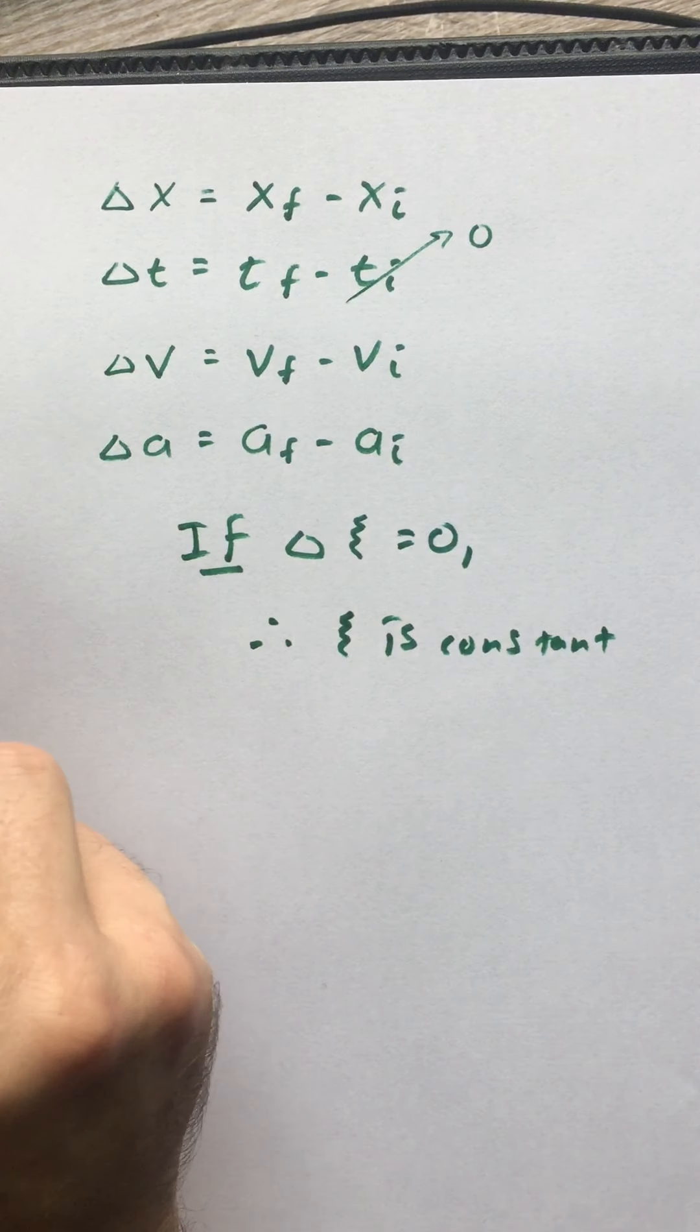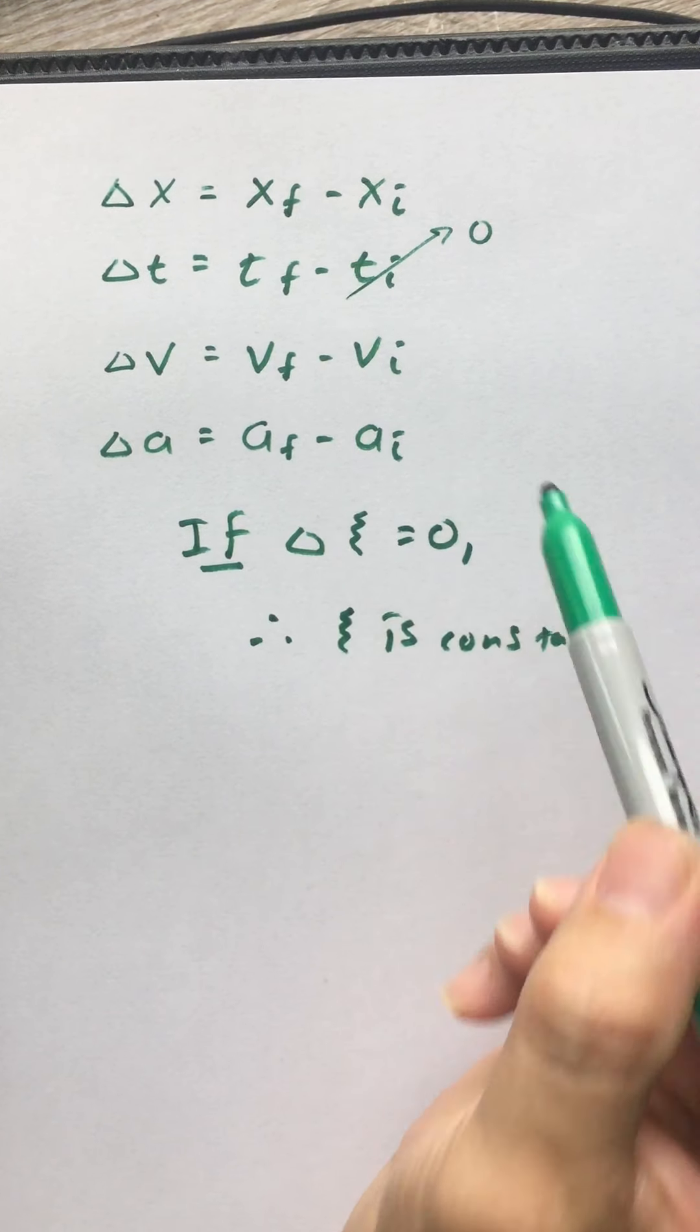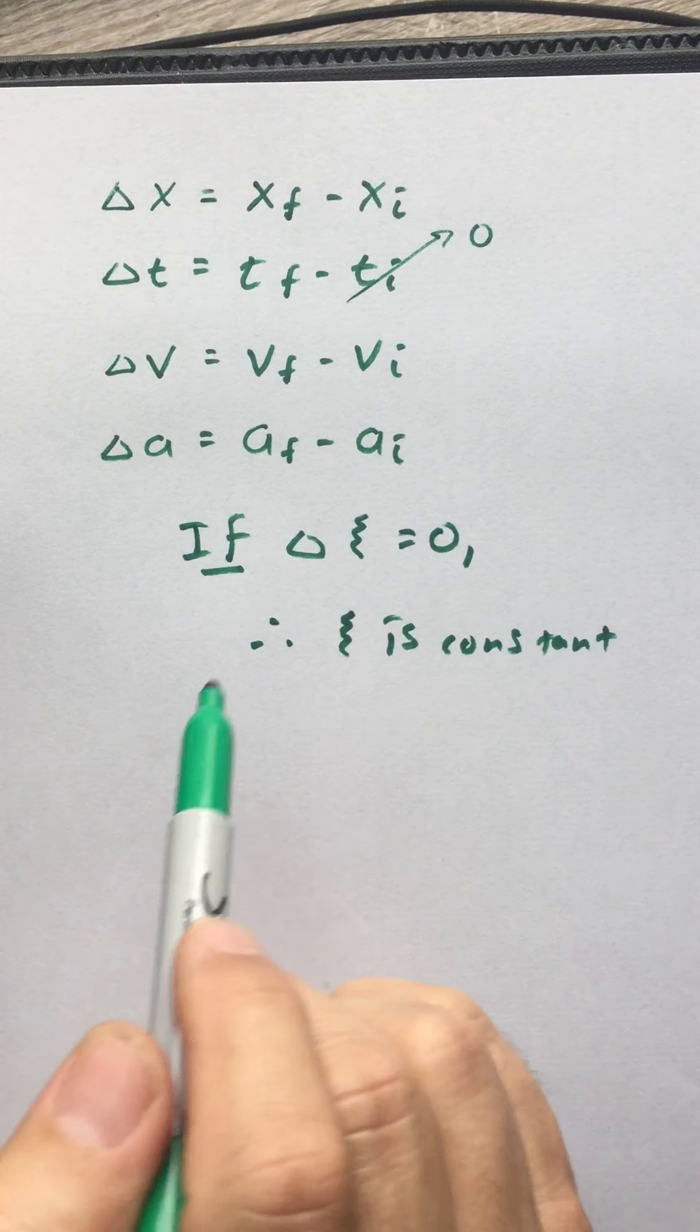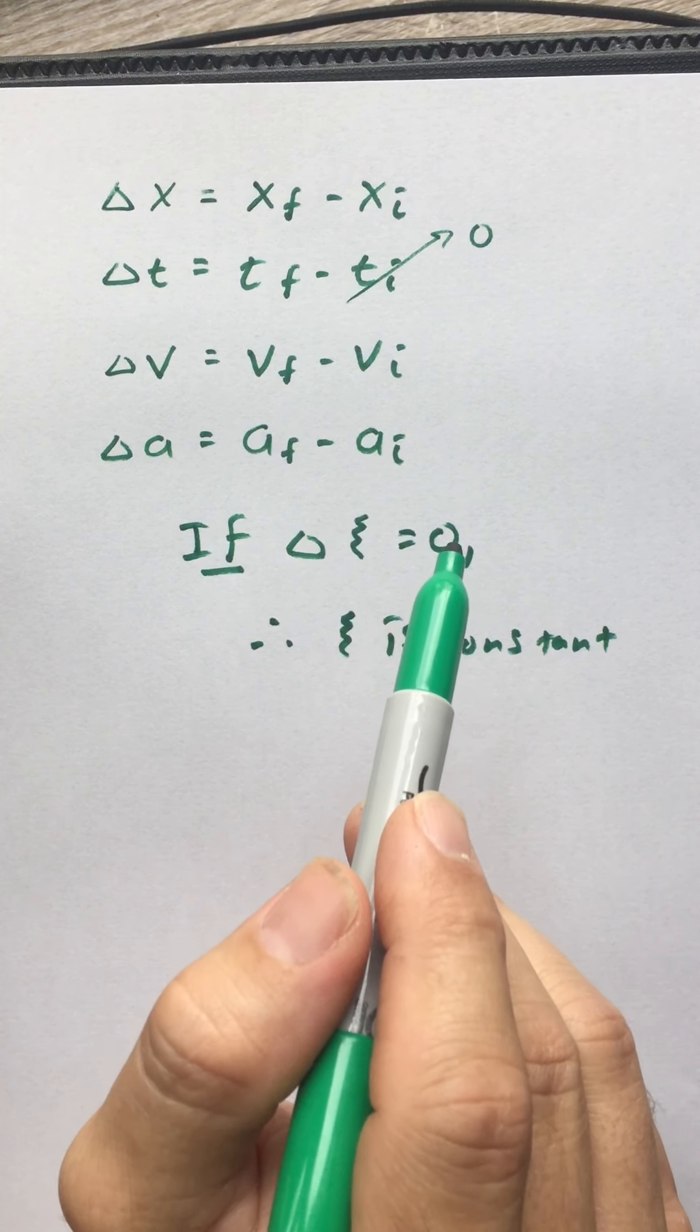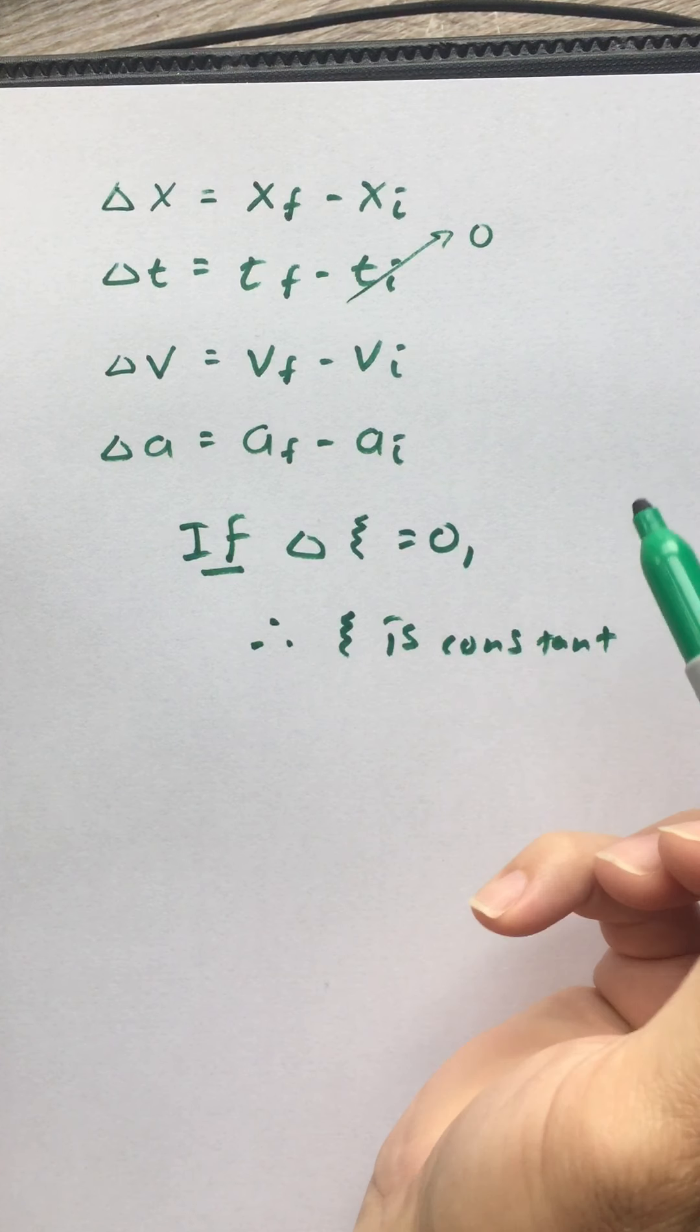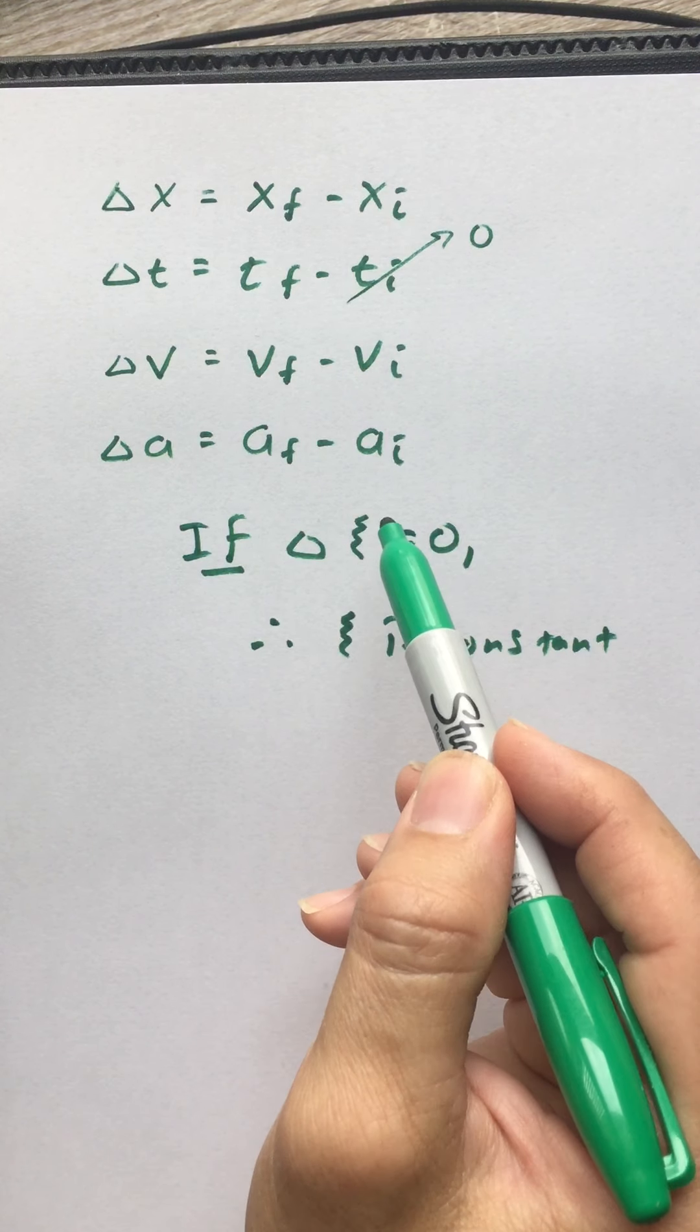Okay, so in any physical system, any of this stuff could or could not be zero. Specifically, let's look at the acceleration. The change in acceleration could be zero, it could not be zero, and of course we can see that there are tons and tons and tons of real-world applications in which the acceleration is not a constant.